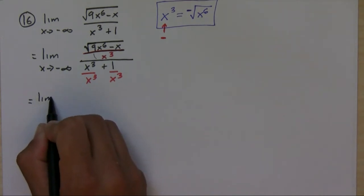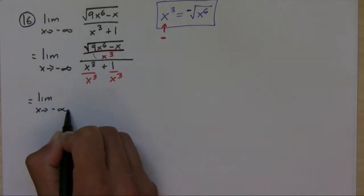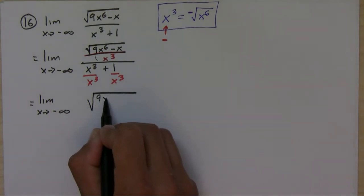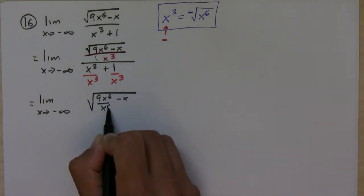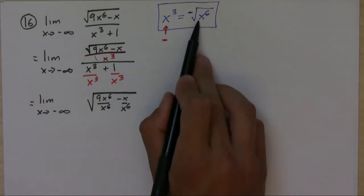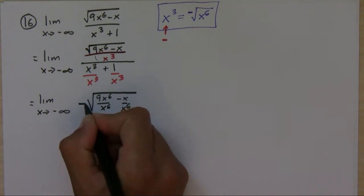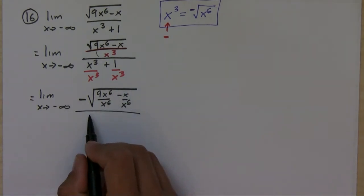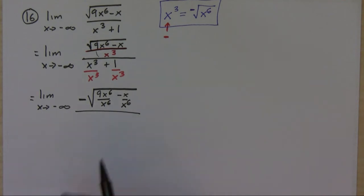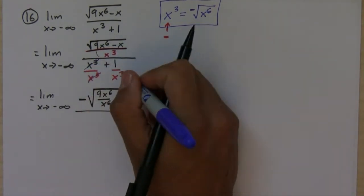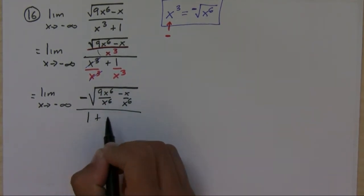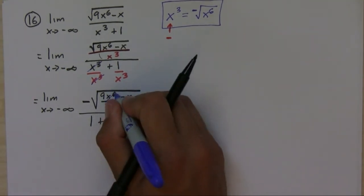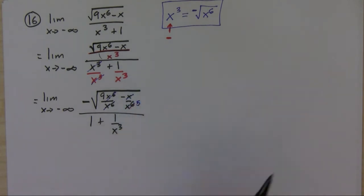That means to make it negative again, you have to add a negative sign to it. So when I rewrite this and bring x cubed inside as x to the sixth, using this conversion I have to take the negative sign outside. Then these terms simplify — I'm going to have one plus one over x to the third. These cancel, and we're left with five.